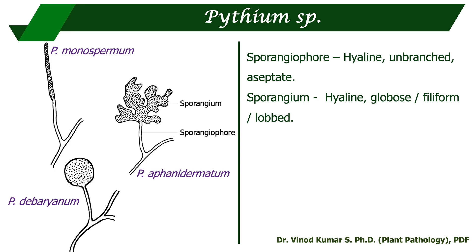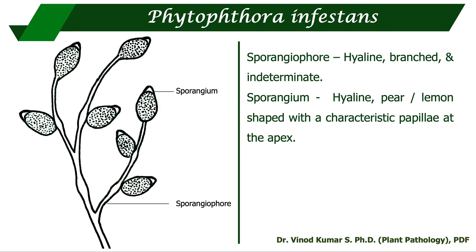Coming to Phytophthora infestans, which causes late blight disease of potato: the sporangiophore is hyaline, branched, and indeterminate, and you can see some swelling where it branches — a typical characteristic of Phytophthora infestans. Regarding the sporangium, they are hyaline, pear or lemon shaped, with a characteristic papilla, which is a thickening at the apex.